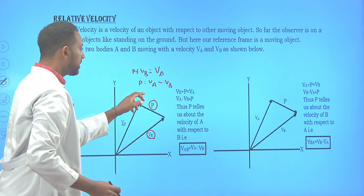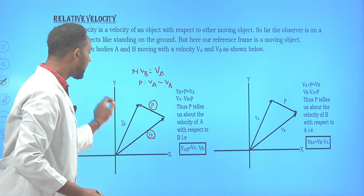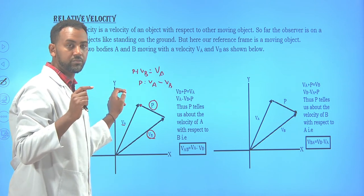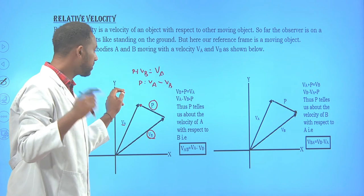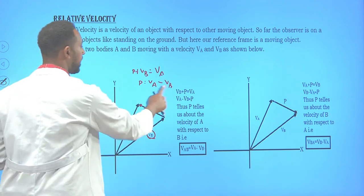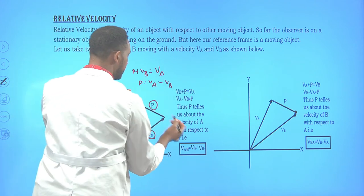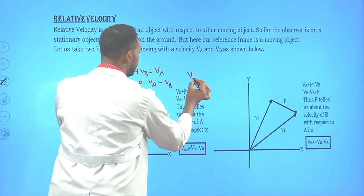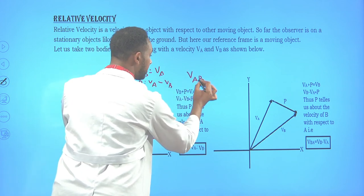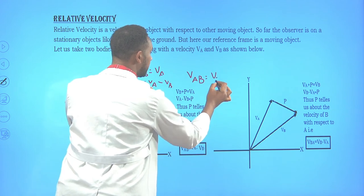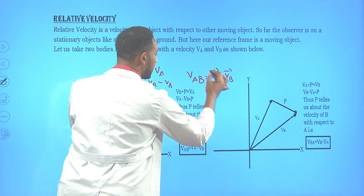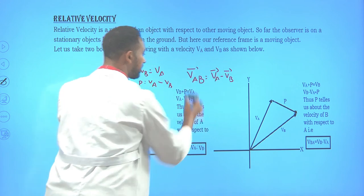The relative velocity of car A as expressed by an observer on car B is V_A − V_B. This is known as V_AB, the relative velocity of car A with respect to an observer on car B. Note that it is expressed in vector form, so you must account for i, j, k unit vector notation.